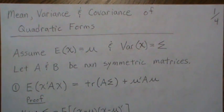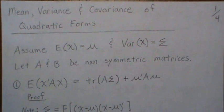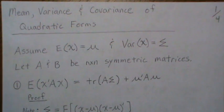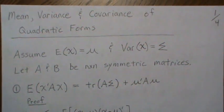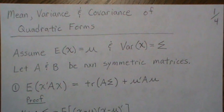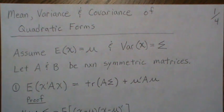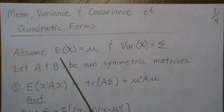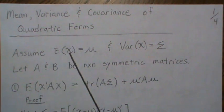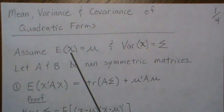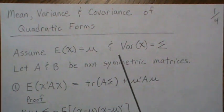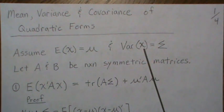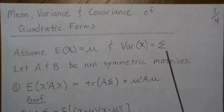In this video we're going to derive the mean, the variance, and the covariance of a quadratic form where we're not assuming any distributional form for the random variable. What that means is we're just going to assume that the mean of our vector is mu and that the variance-covariance of our vector is sigma.